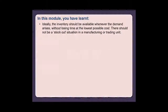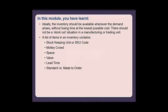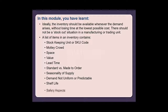Ideally the inventory should be available whenever demand arises, without losing time, at the lowest possible cost, and there should not be a stock-out situation in a manufacturing or trading unit. The inventory contains: SKU code, motley crowd, space, value, lead time, standard versus made-to-order, seasonality of supply, demand (not uniform or predictable), shelf life, safety aspects, and obsolescence.